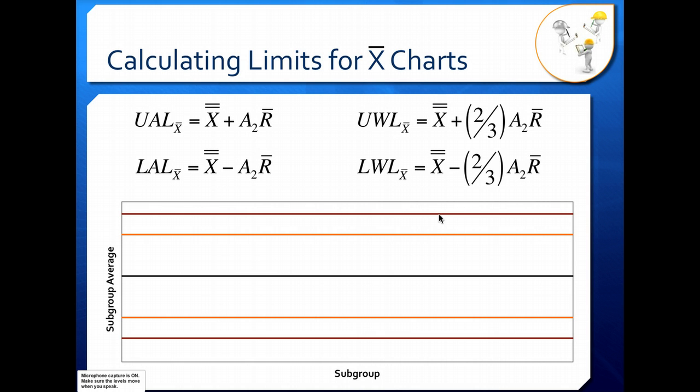Once we have our averages, we can use them to calculate our action limits and our warning limits. Here we see the formulas for X-bar charts. So we need not only X-double-bar, but also R-bar, because this is dependent on the variation in our data we have. Our UAL and our LAL are upper and our lower action limits, respectively.